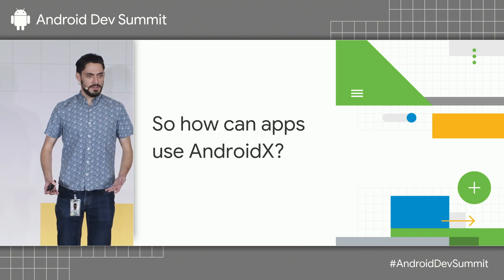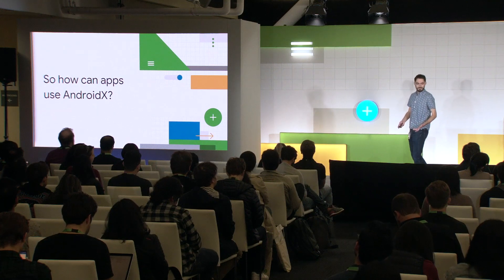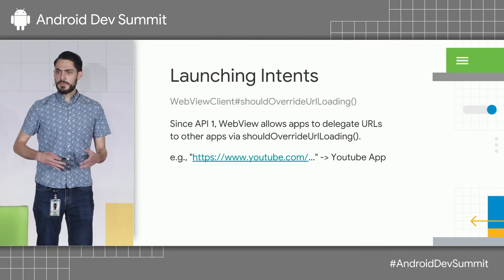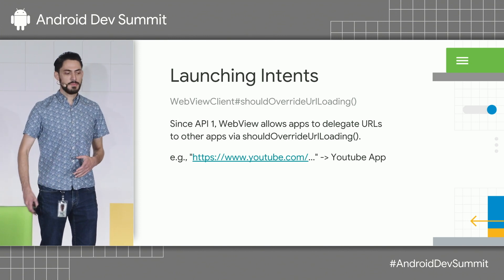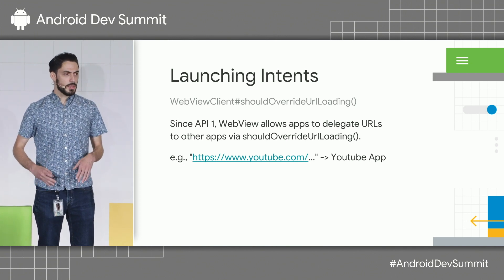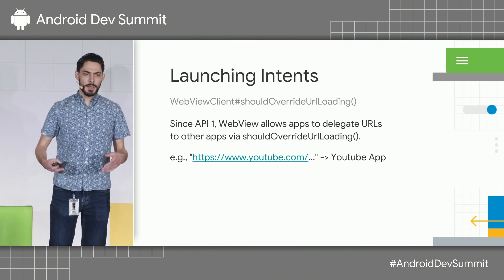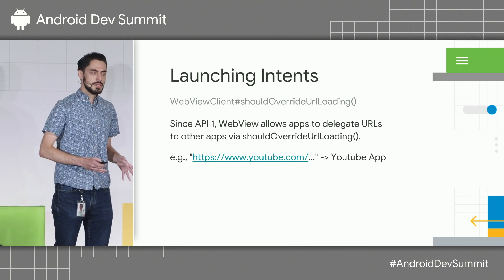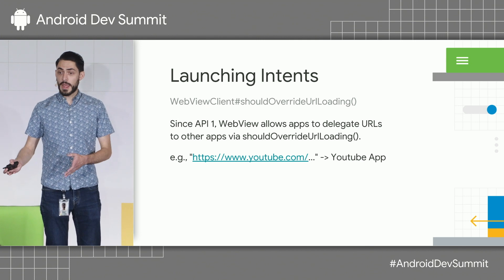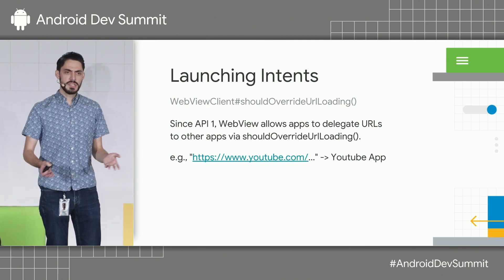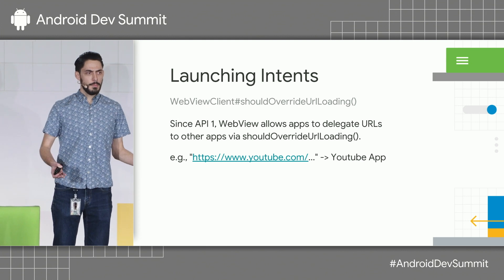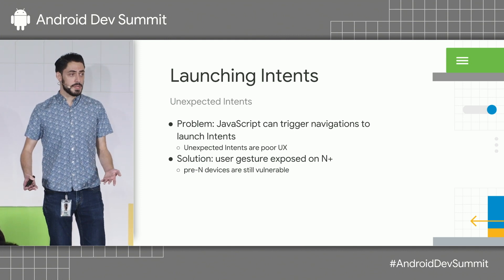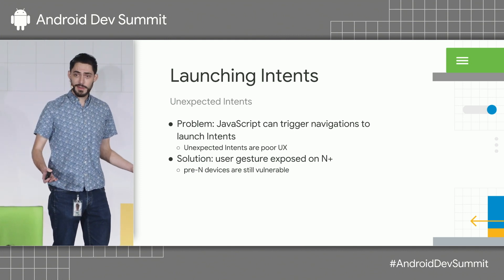How can we actually use this to make your apps better? Since the very beginning of Android, we've given apps a lot of power to customize WebView's behavior. In particular, we added a callback called ShouldOverrideURLLoading. The idea behind this callback is that you could choose to cancel certain navigations in the WebView and dispatch them to a different app as an Android intent — for example, a YouTube URL might be better suited in the YouTube app. A lot of apps took advantage of this, but there was a problem: we didn't get the API right the first time.